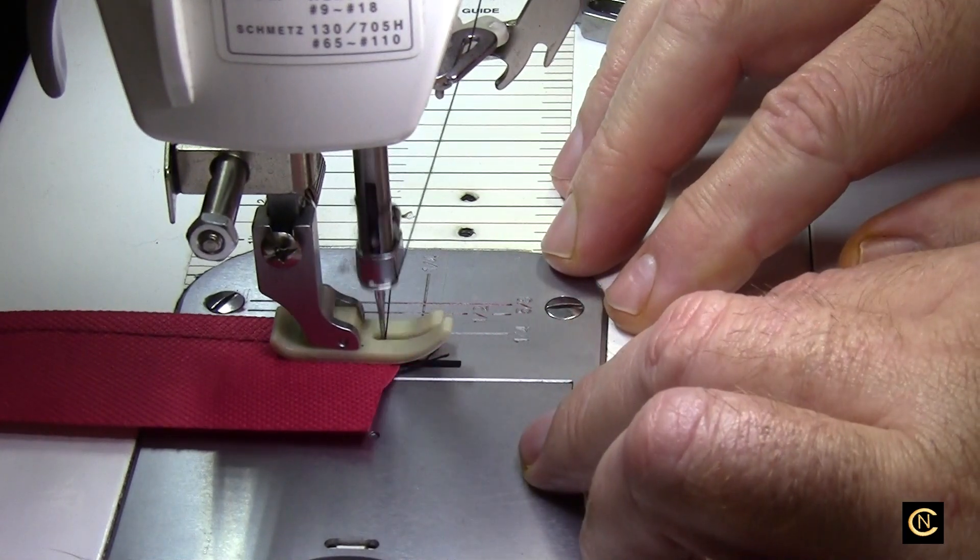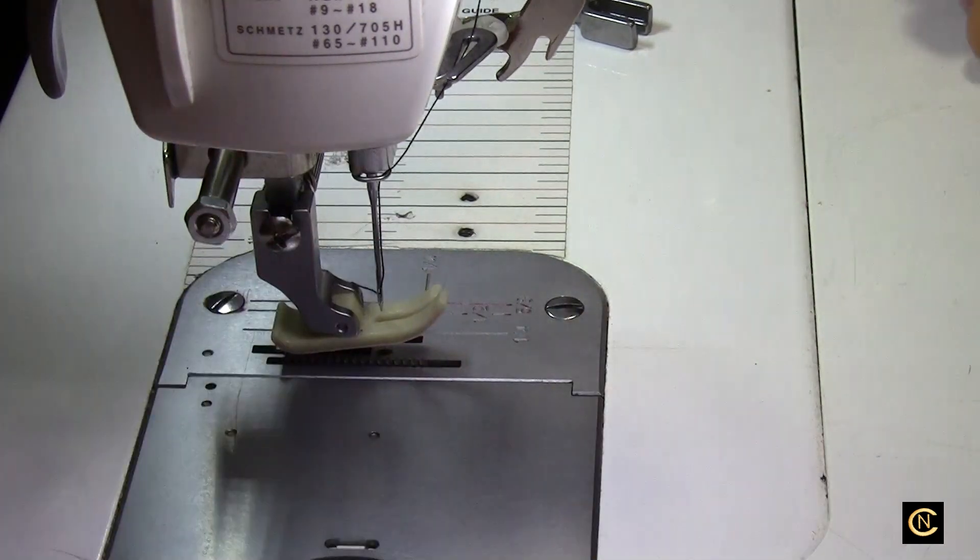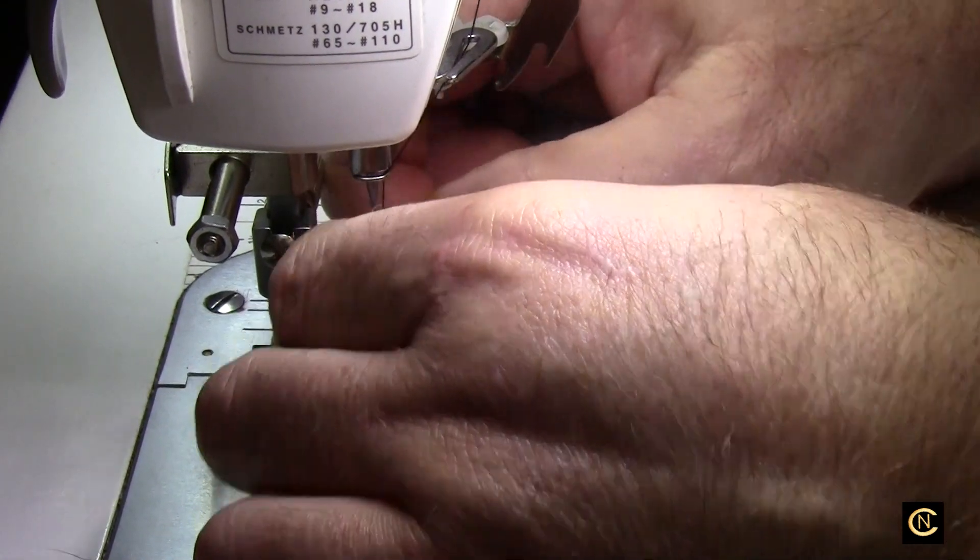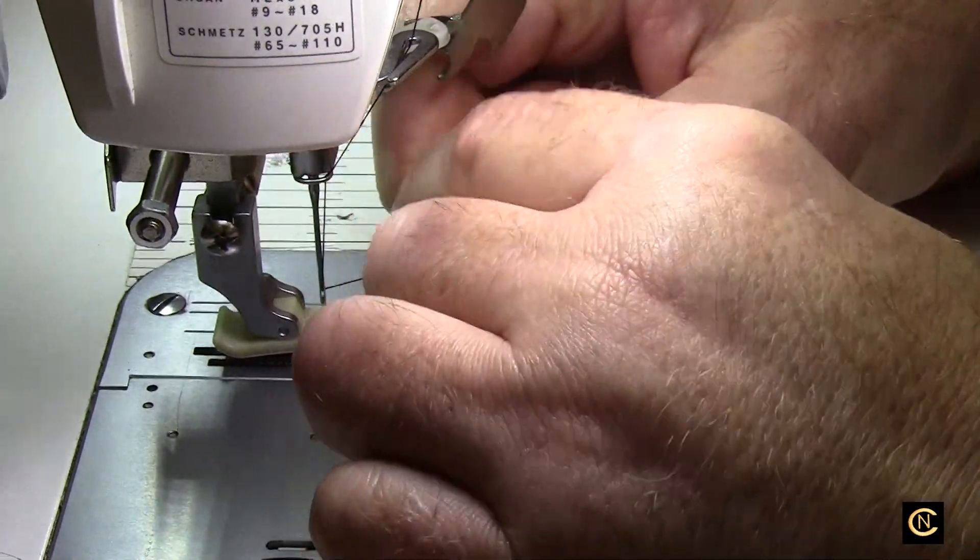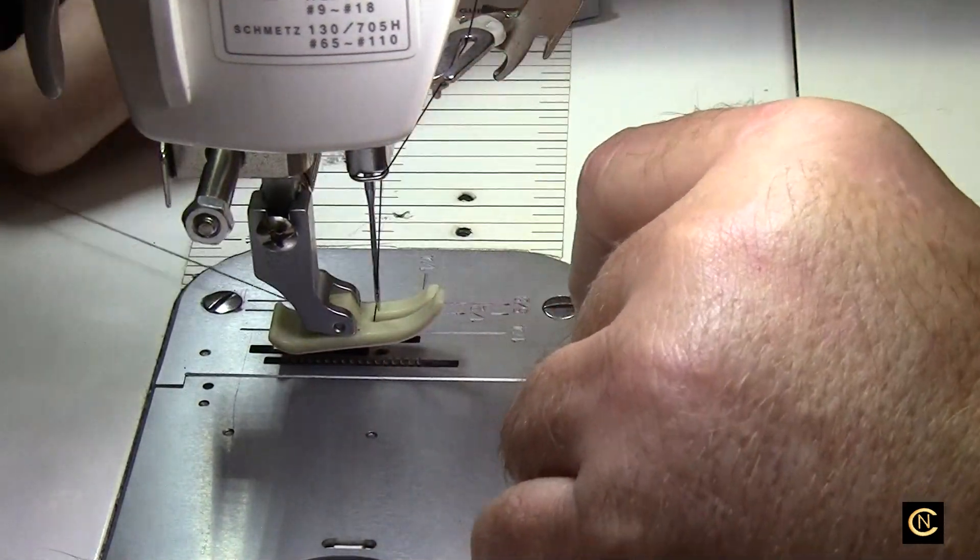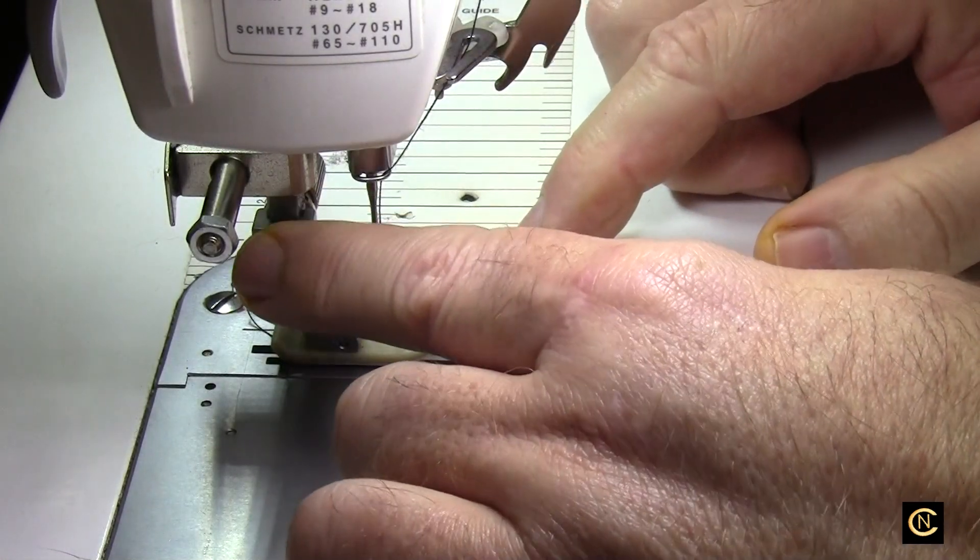This is their first introduction into really getting a full-fledged industrial machine. Full-fledged industrial machines are meant and made for production sewing. That's one of the reasons why we get these kind of machines.